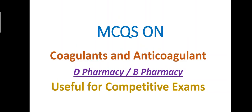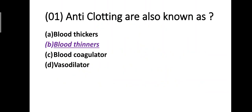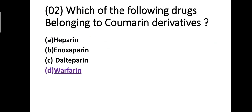Question number one: Anti-clotting agents are also known as — option A: blood thickeners, option B: blood thinners, option C: blood coagulators, option D: vasodilators. Correct answer is option B, blood thinners. Anti-clotting agents are also known as blood thinners.